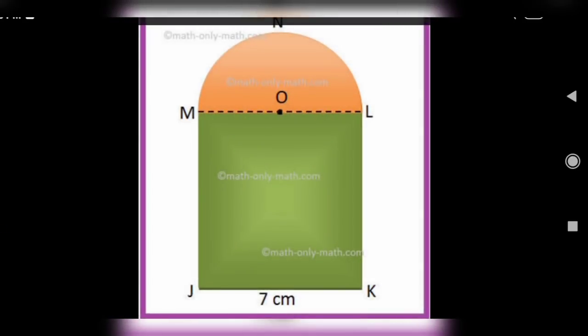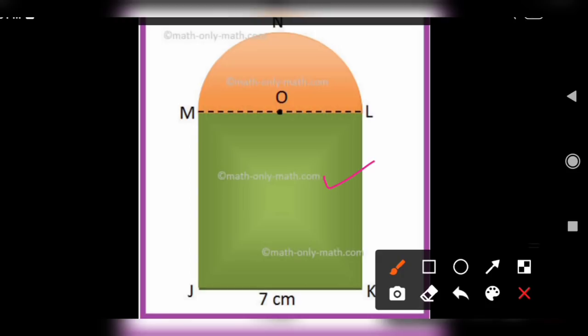This is the combined shape. So what are the shapes here? Here square and semicircle is here. Area means all sides are equal. This is area of square.